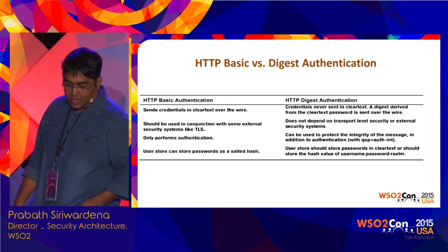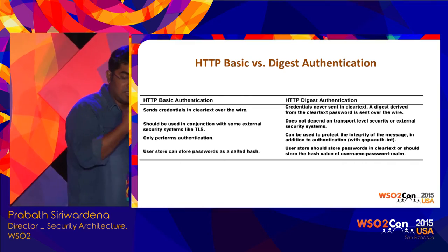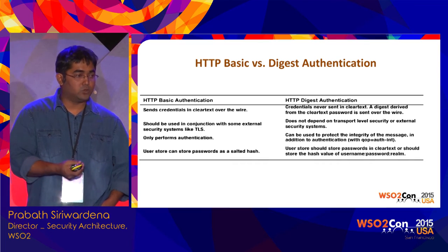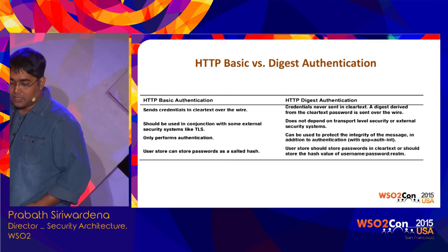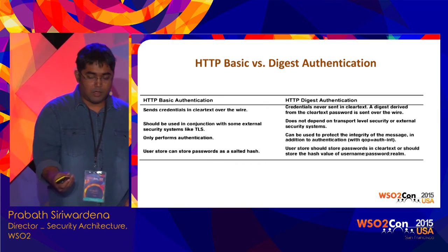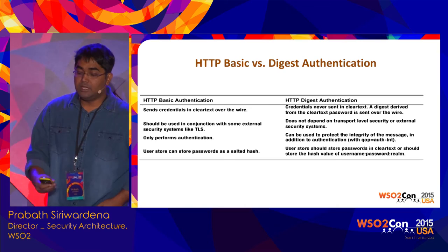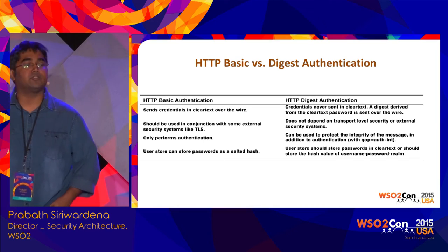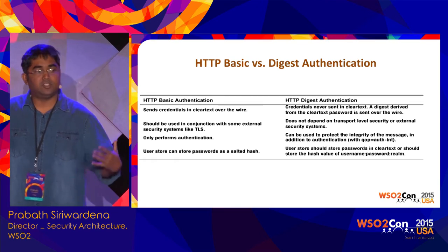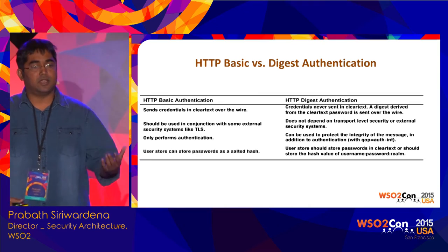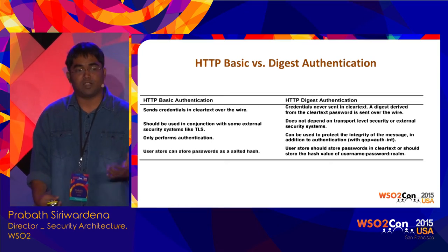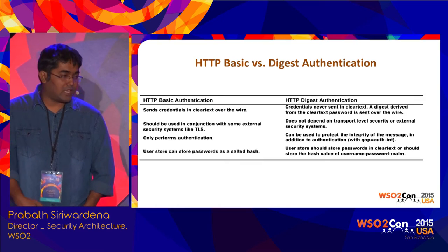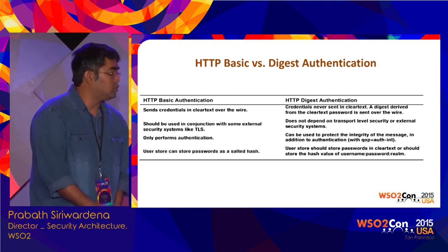Another main difference: with basic auth, you can only achieve authentication — to find out who the user is. With digest auth, there's something called the quality of protection parameter. If you set 'auth' there, it will support both authentication as well as integrity of the message — the complete HTTP entity body will be signed. You calculate the MD5 hash against the complete HTTP entity body. With basic auth you cannot achieve integrity, but with digest auth you can.